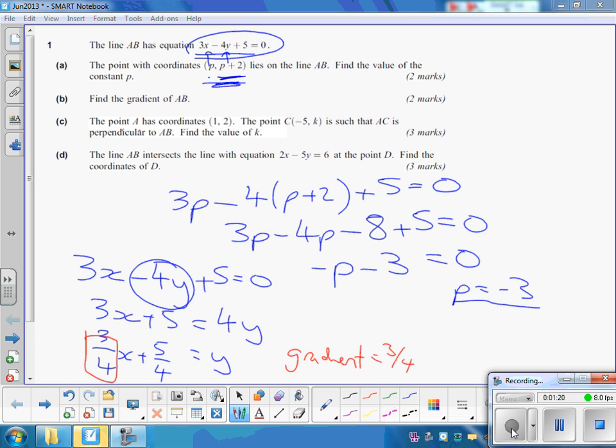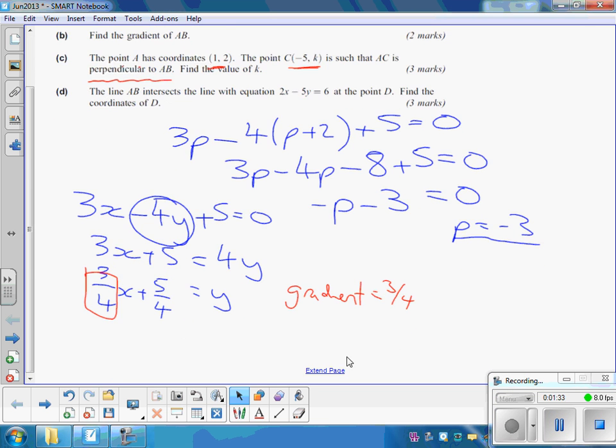Point A has got coordinates 1, 2, and this point here has got the gradients minus 5k, and it's perpendicular. Now, the word perpendicular, of course, means that it meets it at 90 degrees, and if you've got perpendicular gradients, you're going to do minus 1 over the other gradient here.